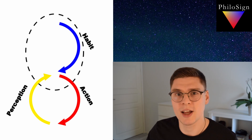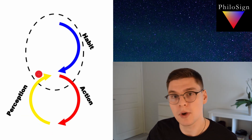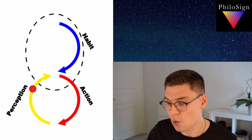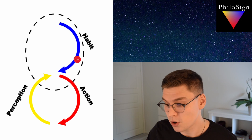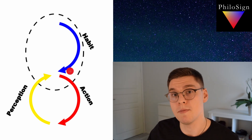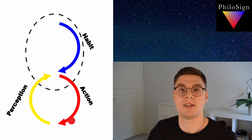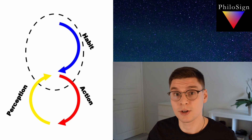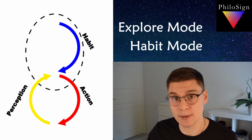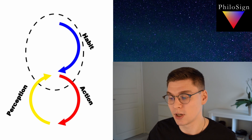The upward going arrow, the arrow of perception, means new information or novelty — new experiences and new ideas that flow into the system. The downward going arrows, on the other hand, mean the execution or implementation of already embodied or internalized knowledge — old knowledge that we are implementing through our actions into the environment. I will be using the names explore mode and habit mode. The upward going arrow is the explore mode and the downward going arrows are the habit mode.